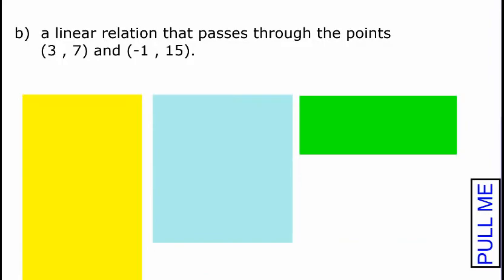In this next example we have the same task — write the equation of the line in slope y-intercept form — but this question looks very different. We don't have a graph. All we're given are two ordered pairs: the points (3, 7) and (-1, 15). We need to figure out the slope and the y-intercept of the line.